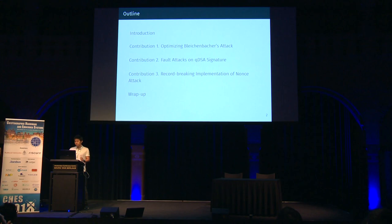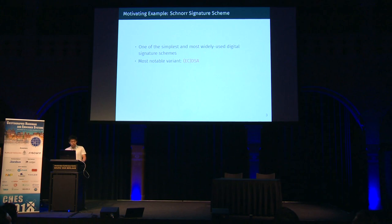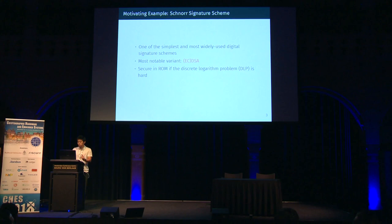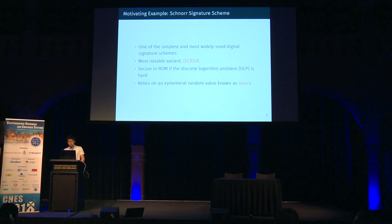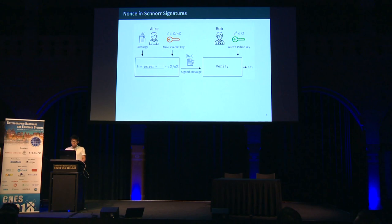As a motivating example, let me briefly describe the Schnorr signature scheme, which is one of the simplest and most widely used digital signature schemes. DSA and EC-DSA are the most notable variants of Schnorr. Schnorr signature is known to be secure in the random oracle model if the discrete log problem is hard. An important feature is that it relies on an ephemeral random value known as nonce. Alice, the signer, holds a secret key D chosen from integers mod n, where n is a large prime. Whenever Alice generates a new signature, she first samples integer k from Z/nZ uniformly at random — this integer k is called the nonce.